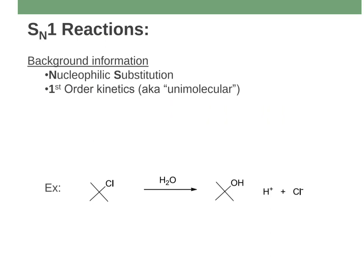SN1 — a little background: it's SN1 because it is a substitution. We have a molecule where the chlorine ends up getting switched out by an OH group. It's a nucleophilic substitution because the thing doing the substituting is water, which behaves as a nucleophile. And it's first-order kinetics — a unimolecular reaction — meaning the rate depends on the rate constant and the concentration of just one thing.